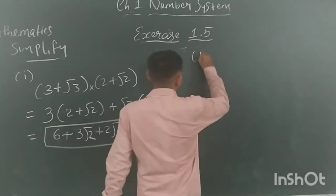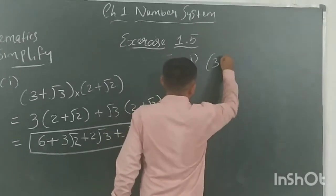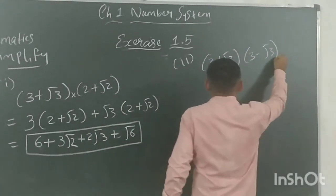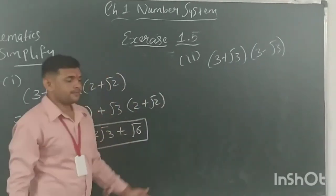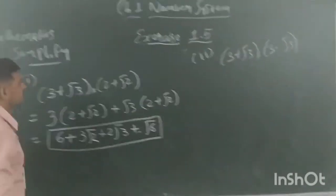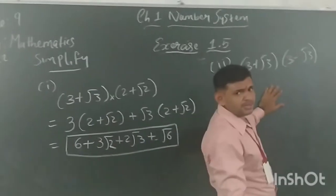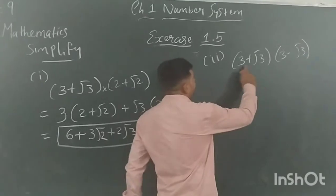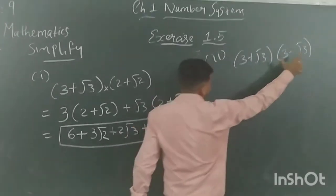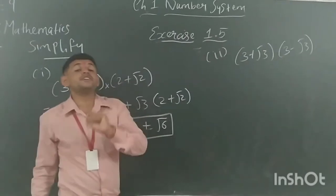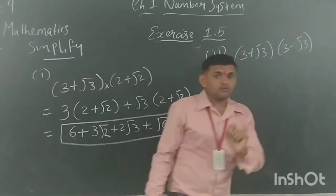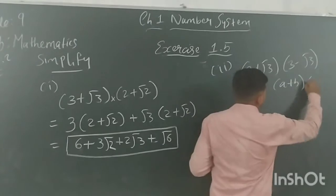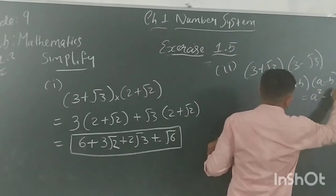The second sum, (b): (3 + root 3)(3 − root 3). Here we can apply a formula from grade 8 factorization. The terms in both brackets are the same — only the sign differs. The formula is (a + b)(a − b) = a² − b².